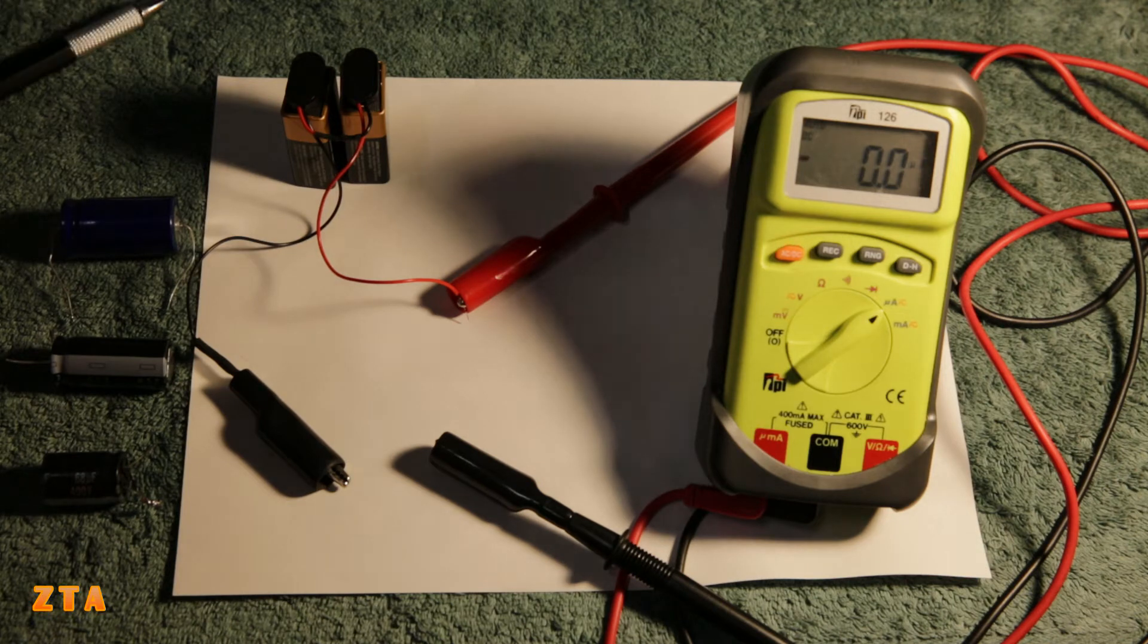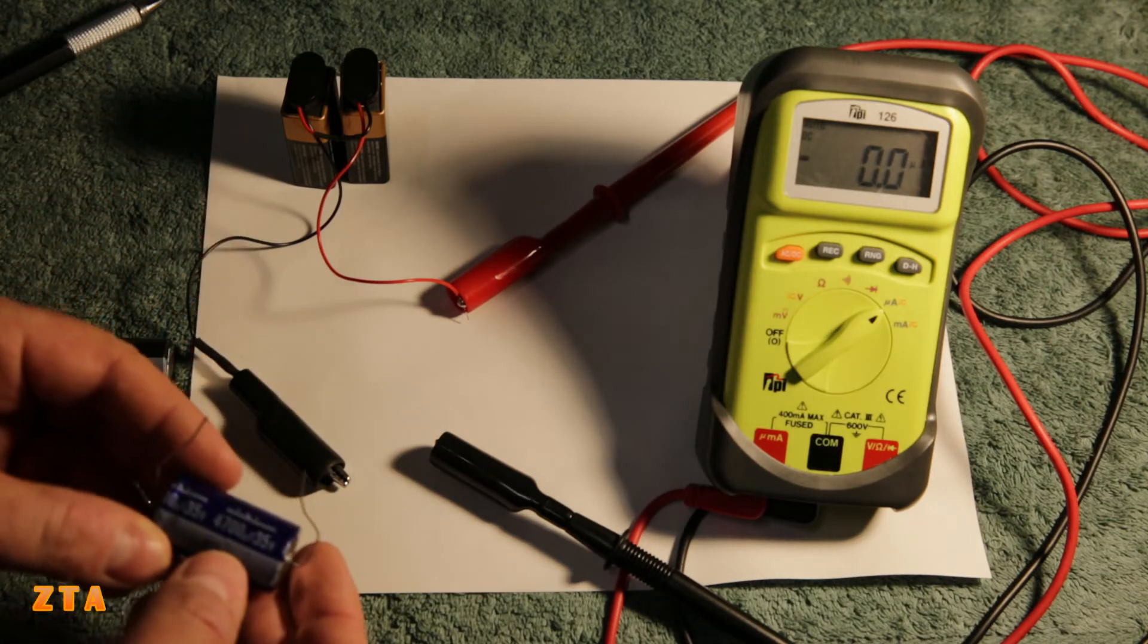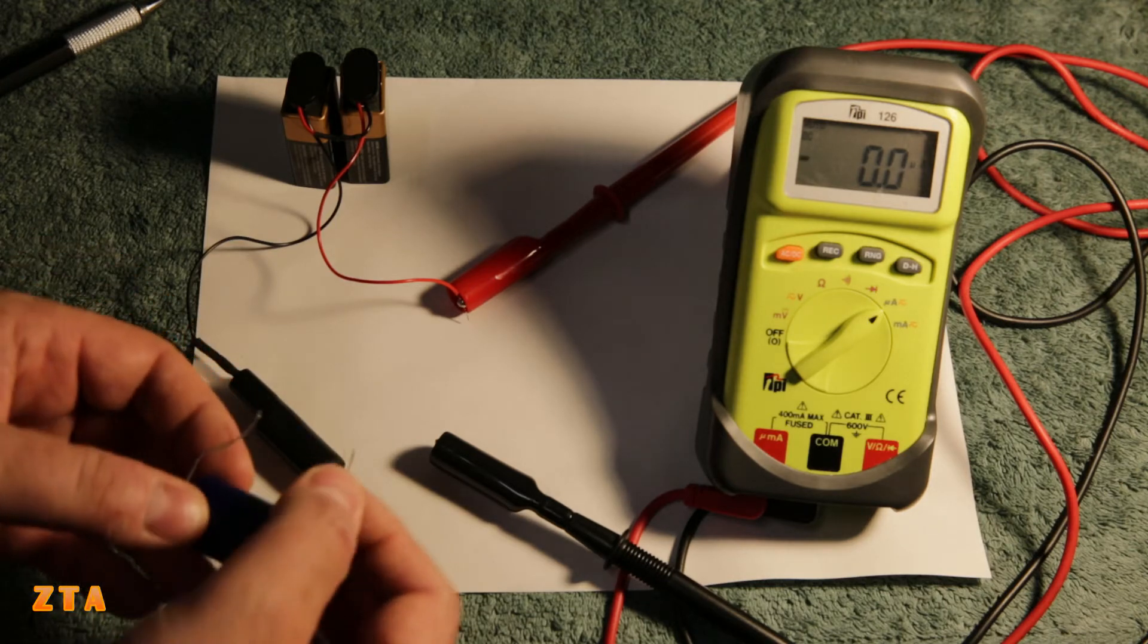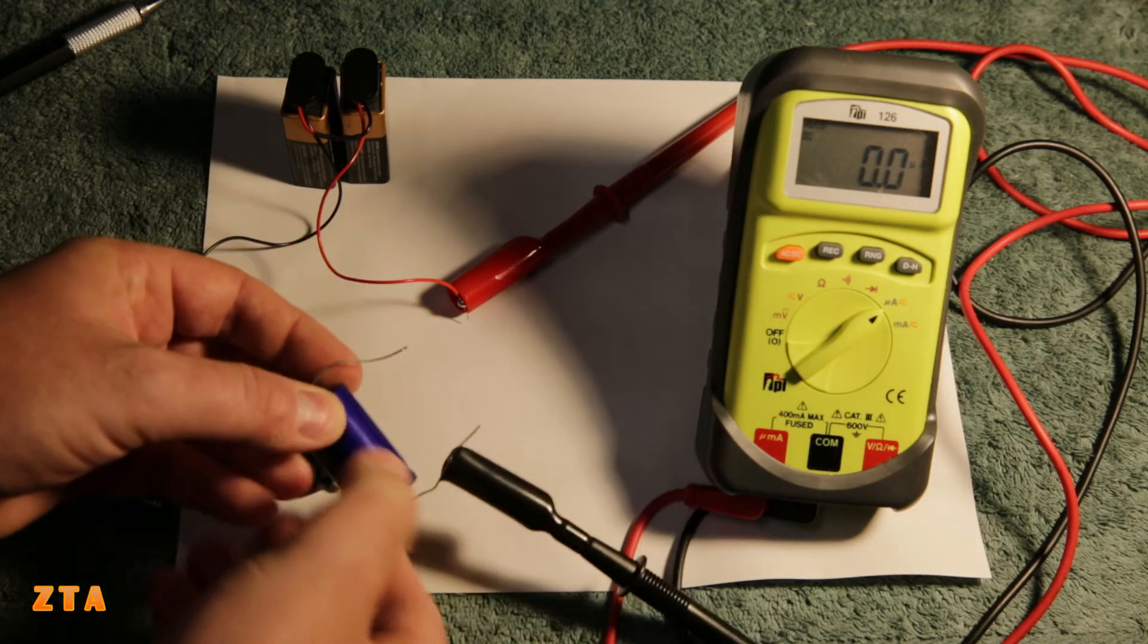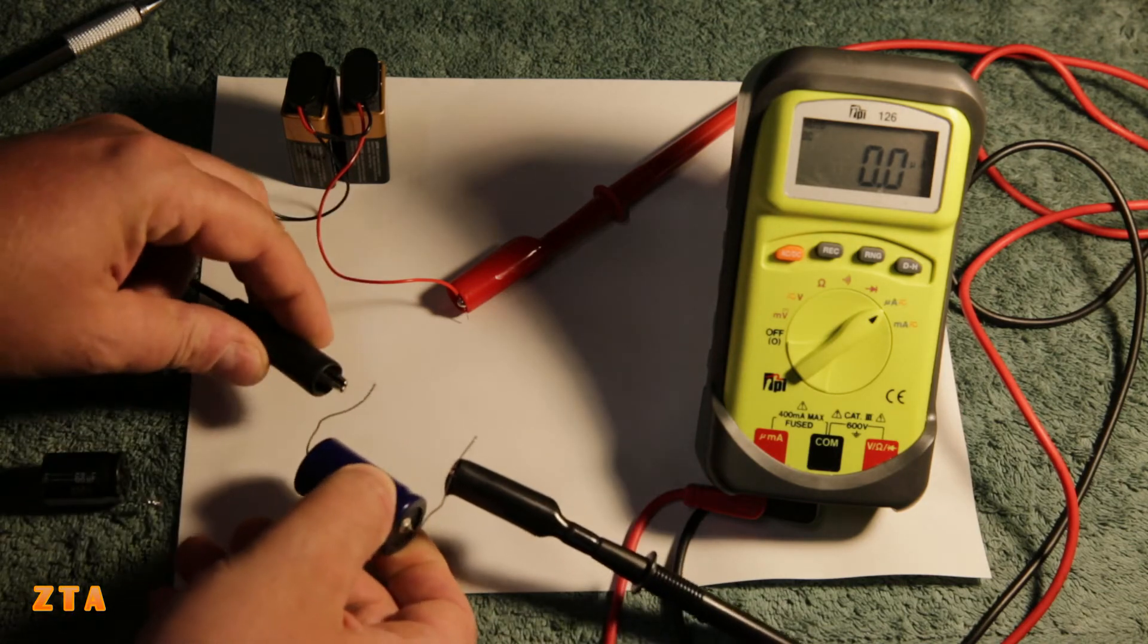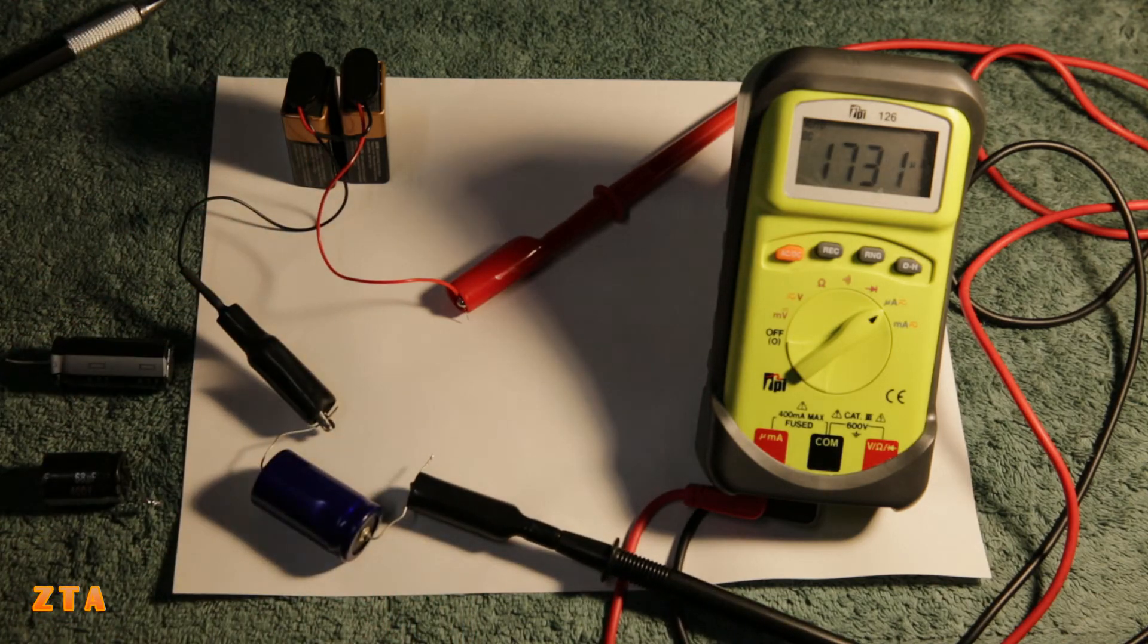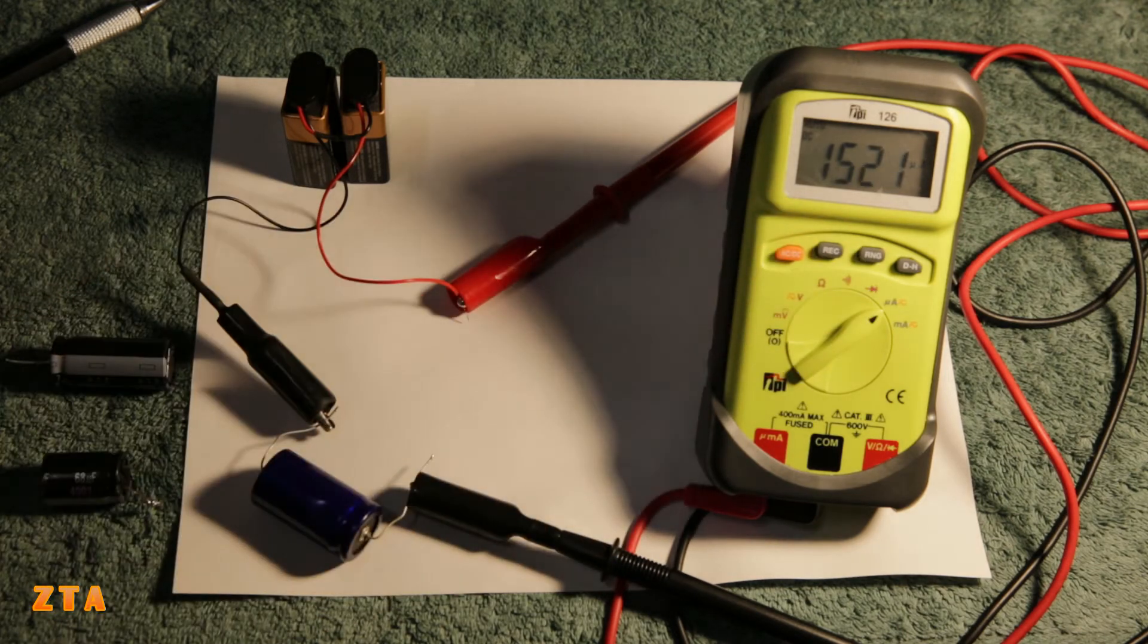Let's measure the first capacitor. This is a 4,700 microfarad 35-volt capacitor. I'm just going to hook it up to one side of the multimeter here and the other side to this clip. We'll wait about 10-20 seconds. As you can see we got about 1.5 milliamps going through there. It's going down very slowly.